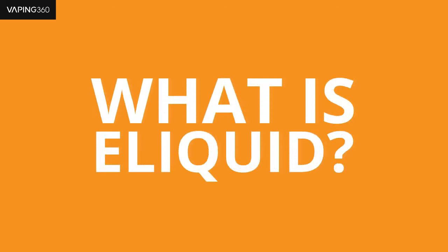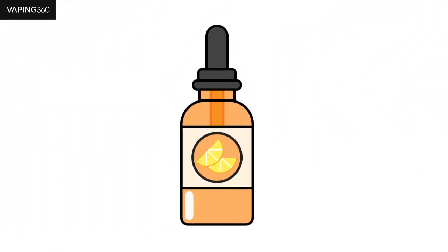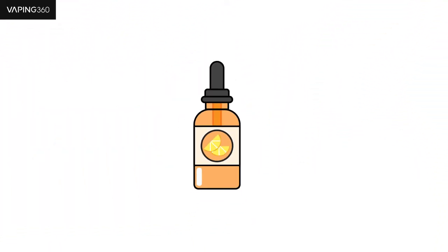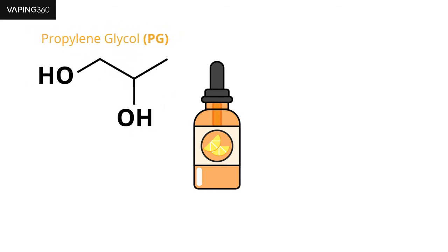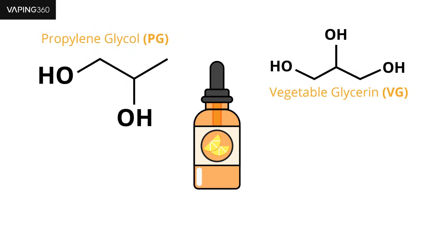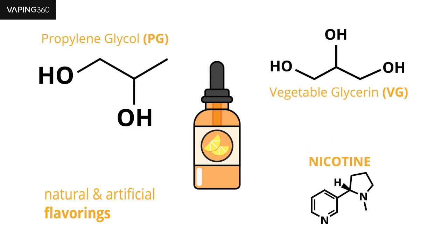What is e-liquid? Well, let me explain. E-liquid is made up of four basic ingredients: propylene glycol, vegetable glycerin, natural and artificial flavoring, and sometimes nicotine.